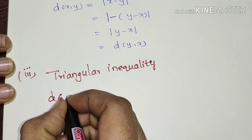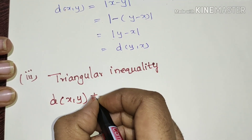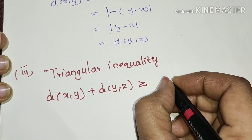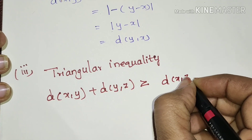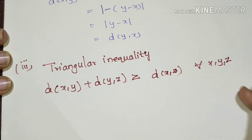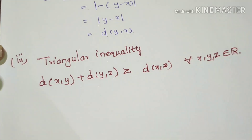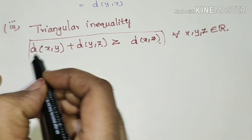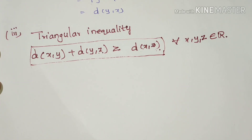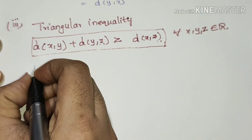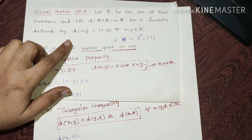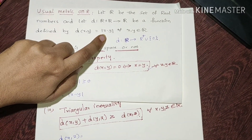Now we will prove the third property — the triangle inequality. The triangle inequality states: distance of x, y plus distance of y, z is greater than or equal to distance of x, z, where x, y, z are real numbers. We start from the RHS: distance of x, z equals modulus of x minus z.